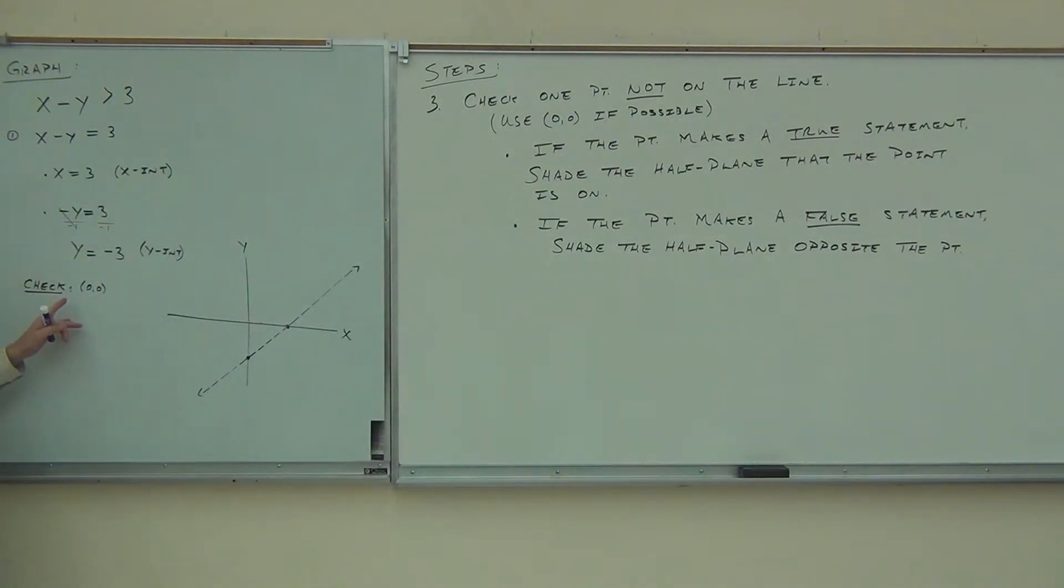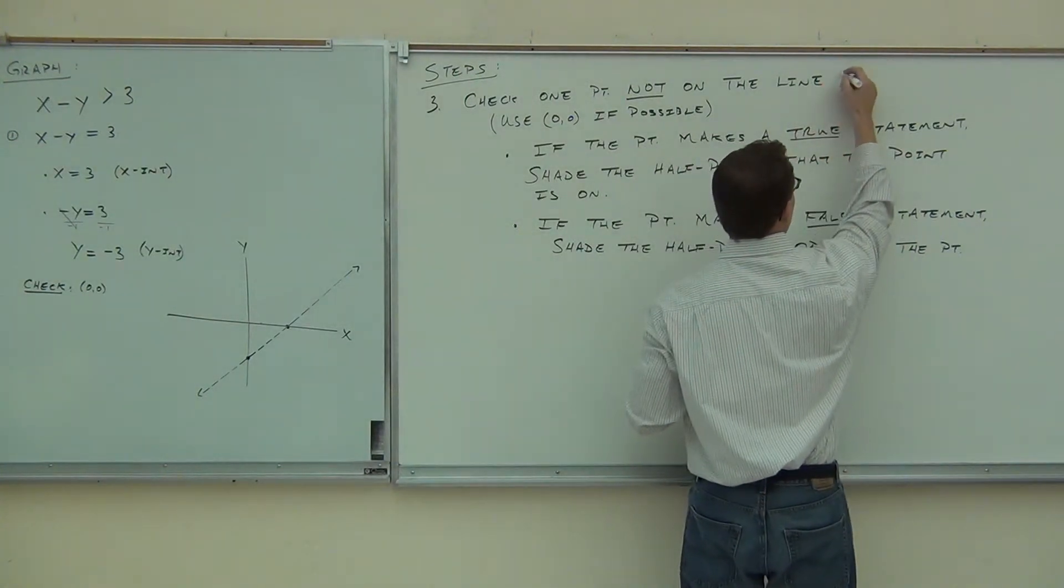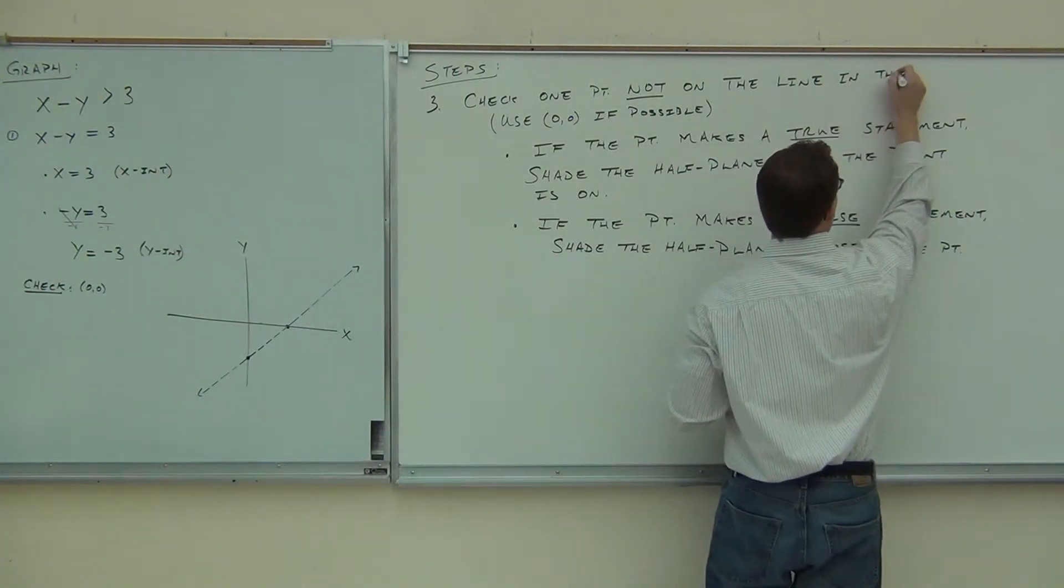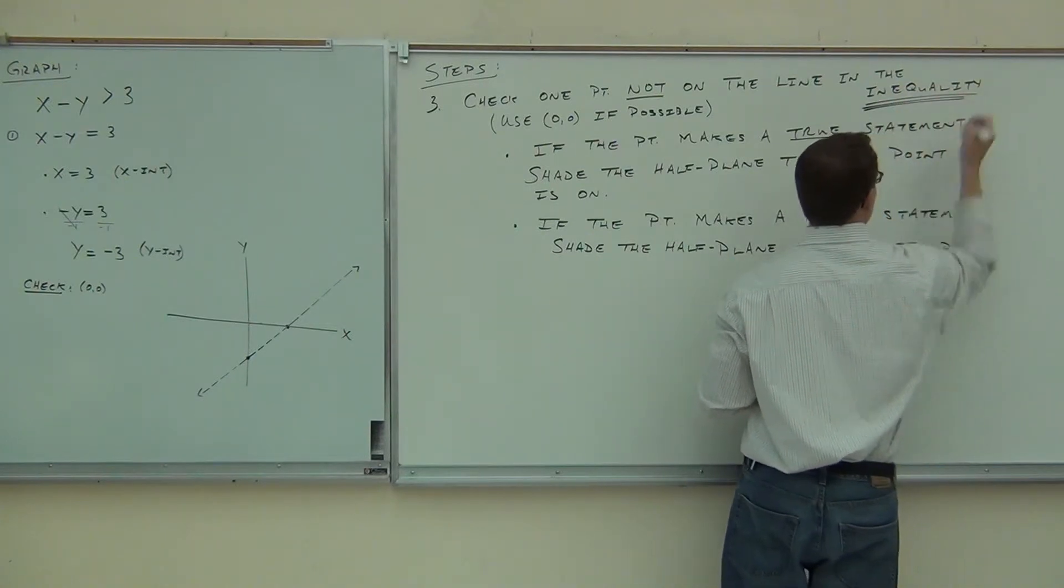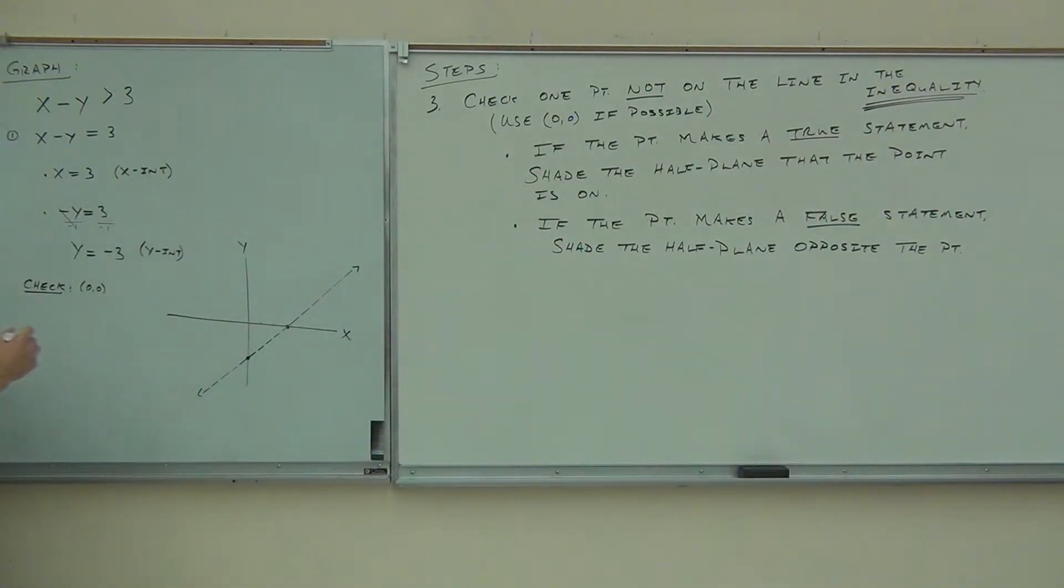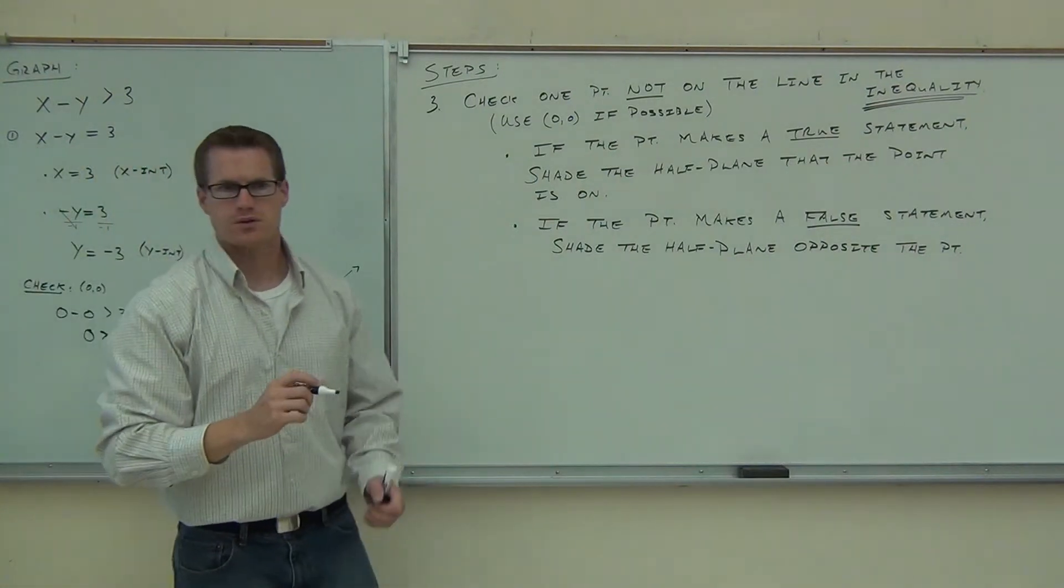And here's how we do it. We just take 0, 0, and you're going to plug this into the equals one or the inequality? What do you think? This was just temporary. This was only for one reason. It was just to make your line. We're going to plug this back into your original inequality. So check one point not on the line in the inequality. So we should have, instead of x, 0, instead of y, 0, and we're checking to see if that's greater than 3. What do we get on the left-hand side, everybody? This is where you've got to be good at this. Is 0 greater than 3? Is that true or is that false? False. Definitely false.